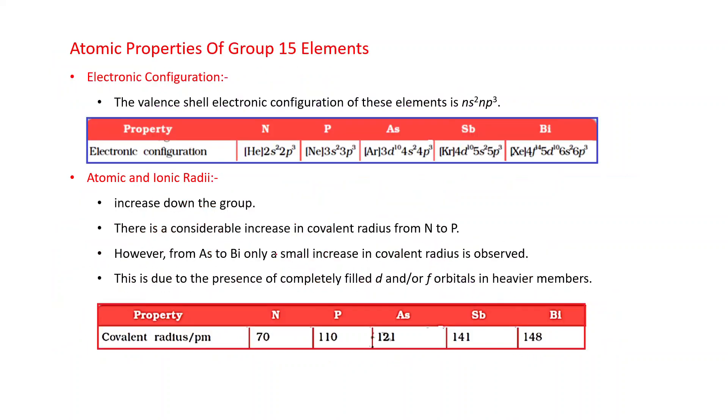Now atomic properties of Group 15 elements. First is electronic configuration. The valency shell electronic configuration is ns2np3. Individually: nitrogen 2s2 2p3, phosphorus 3s2 3p3, arsenic 3d10 4s2 4p3, antimony 4d10 5s2 5p3, and bismuth 4f14 5d10 6s2 6p3. Remember in arsenic there are 3d10 electrons, in Sb 4d10 electrons, and in Bi 4f14 electrons.